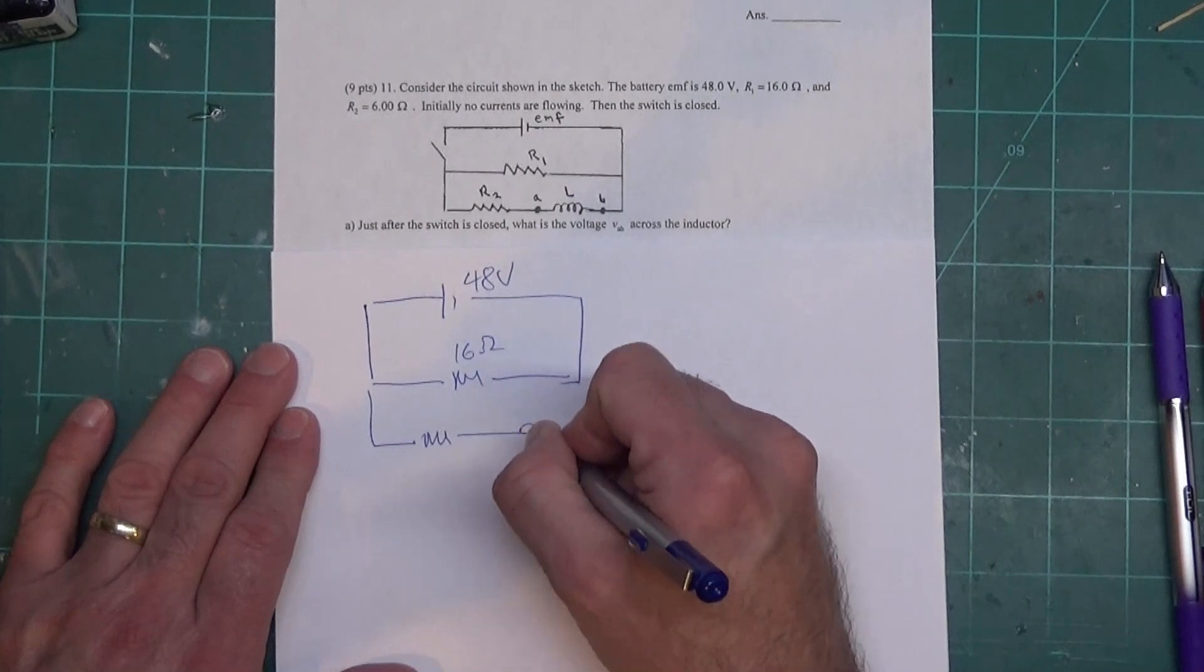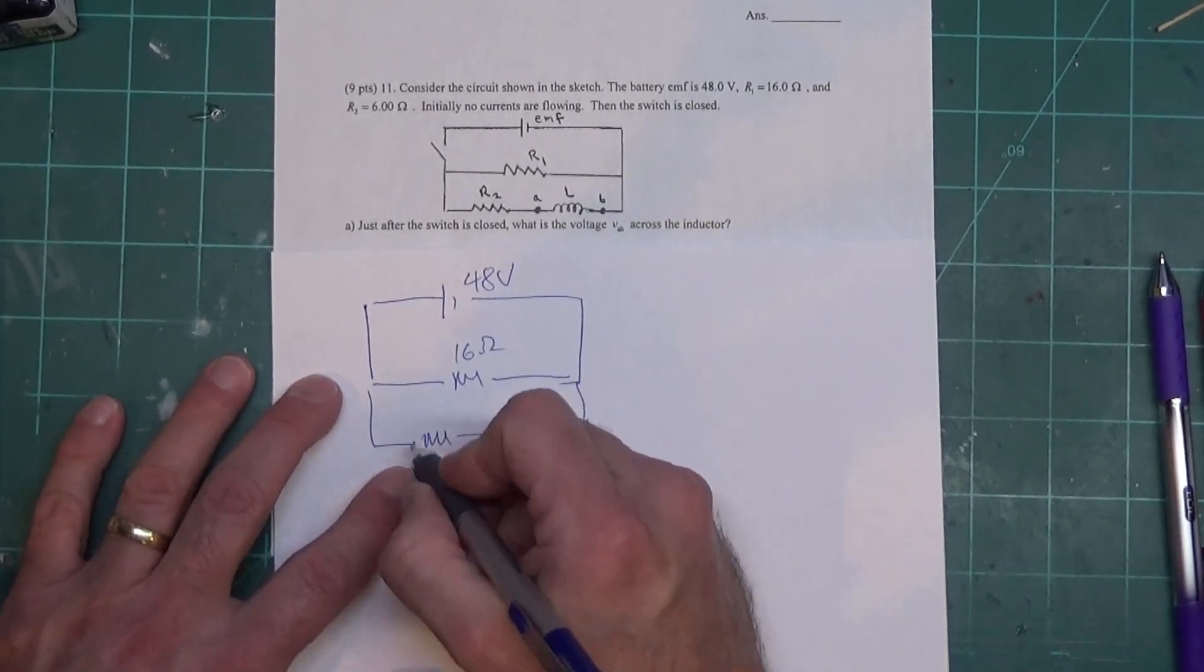This first resistor is 16 ohms and down here we have a 6 ohm resistor and our inductor is right here. Yes, 6 ohms.